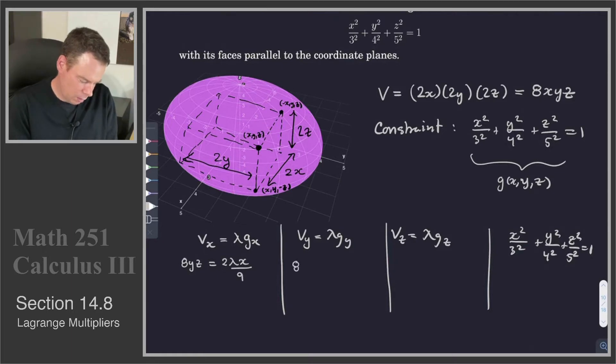This would be 8xz = 2λy/4², which is 16. And this one is 8xy = 2λz/25.